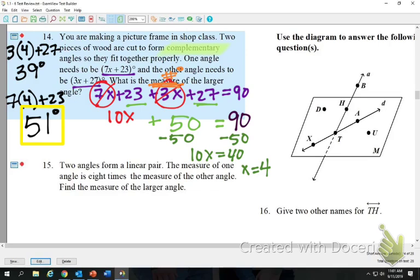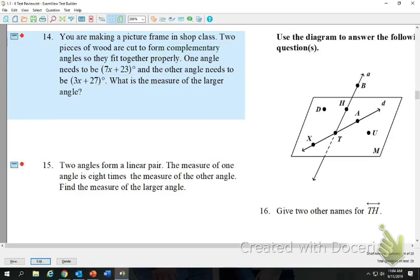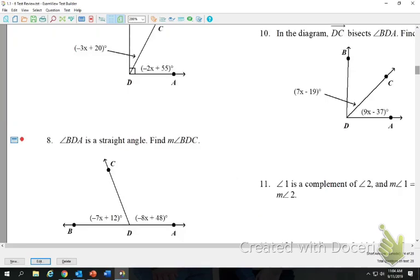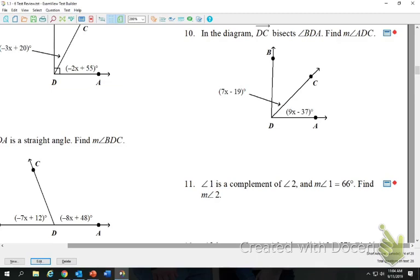Were there any other questions of the evens that we wanted to do? So how do you know when the x's are going to be on the same side of the equation and when they're not going to be on the same side? Well, it says complementary. Complementary means two angles that add up and equal 90. So I just know the definition of complementary. They're only on the opposite side if it says the word bisects. Like, I don't think you had one last night. Yeah, you did number 10. It says in the diagram, DC bisects BDA.